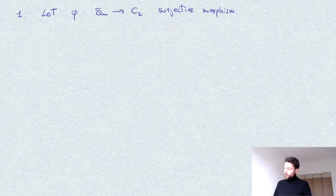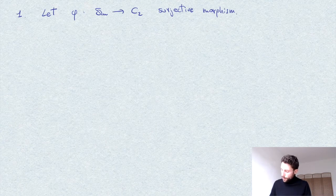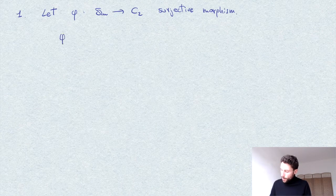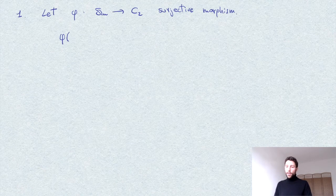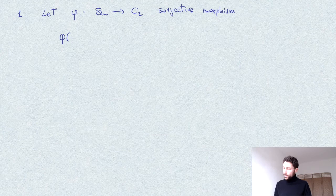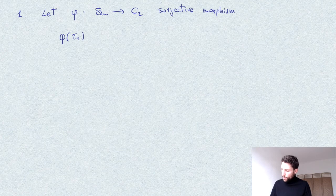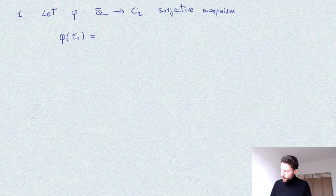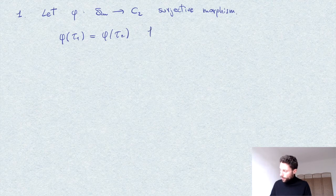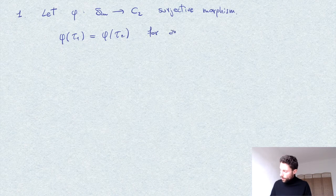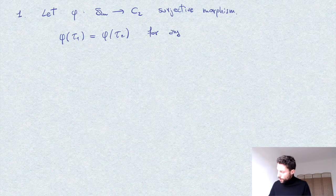Now first observe that if we apply phi to any transposition, the value has to be the same. In other words, phi of tau_1 is equal to phi of tau_2 for any two transpositions.